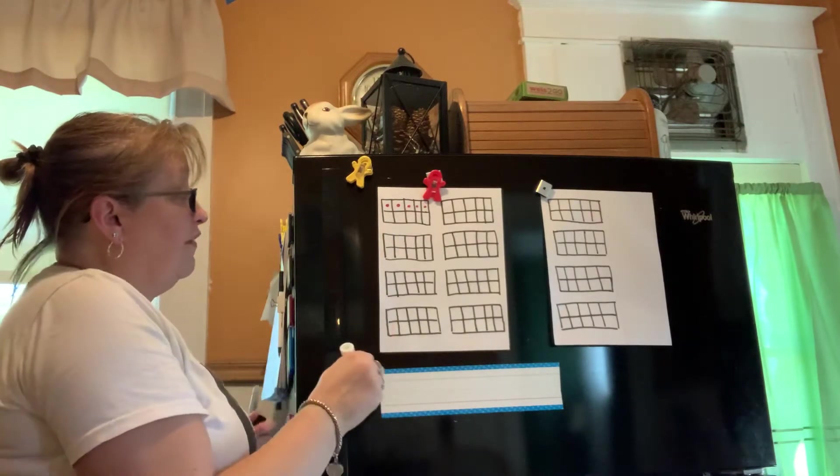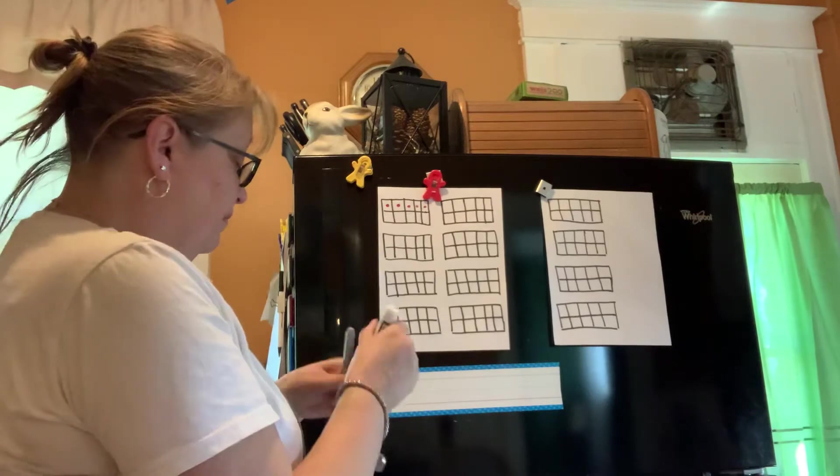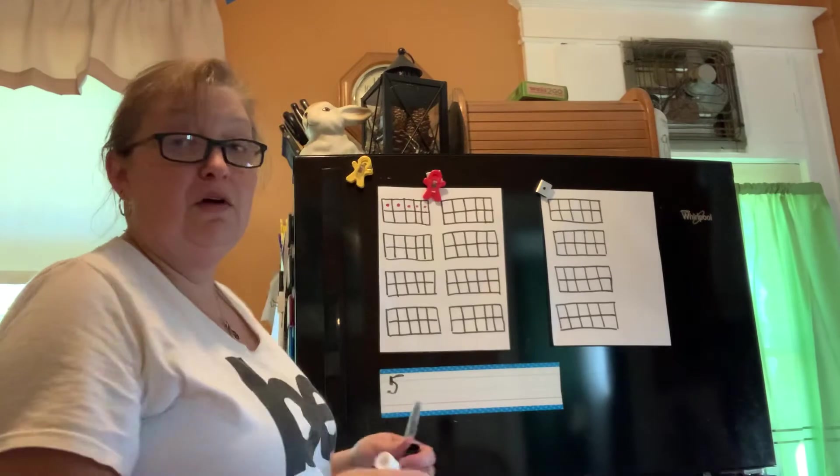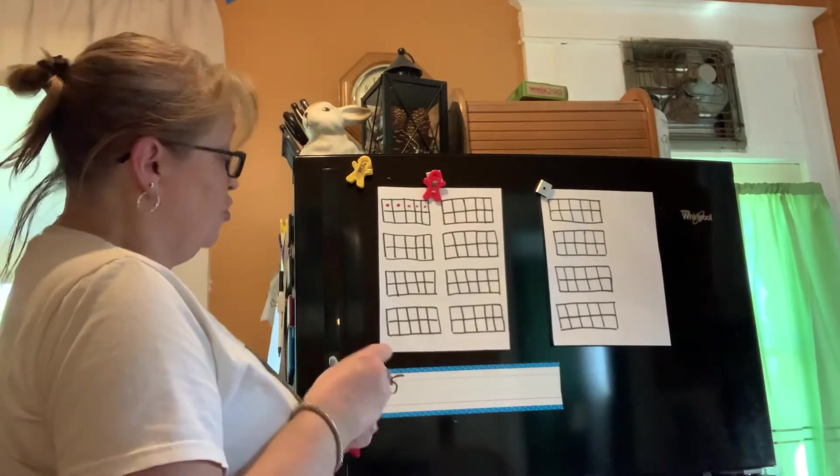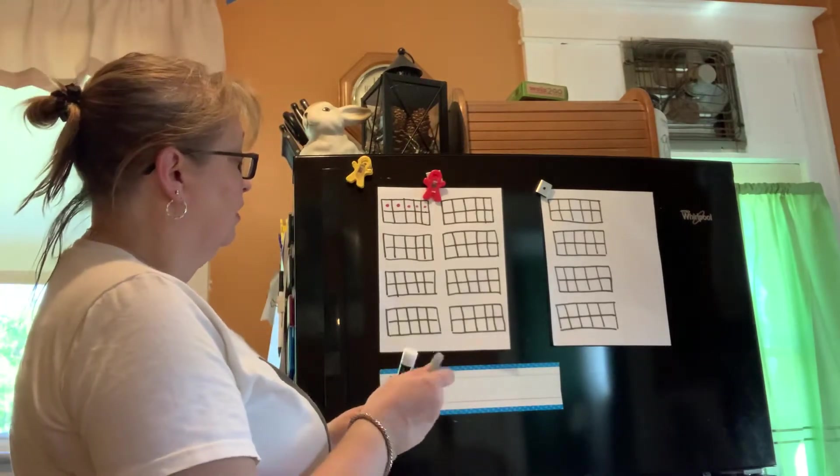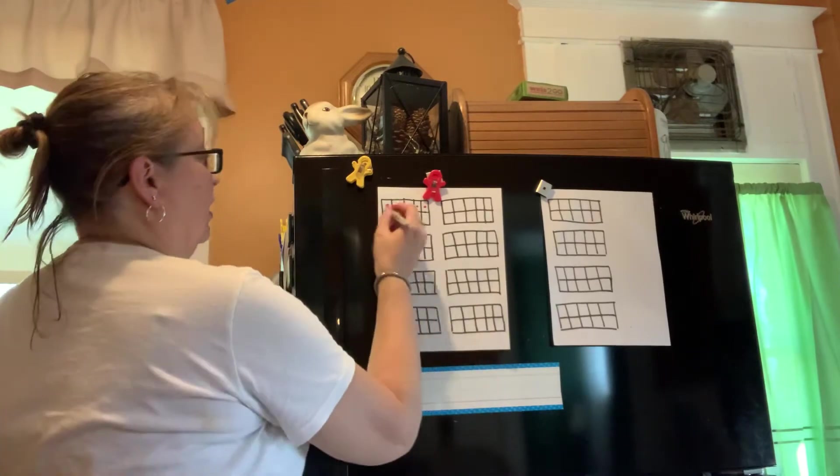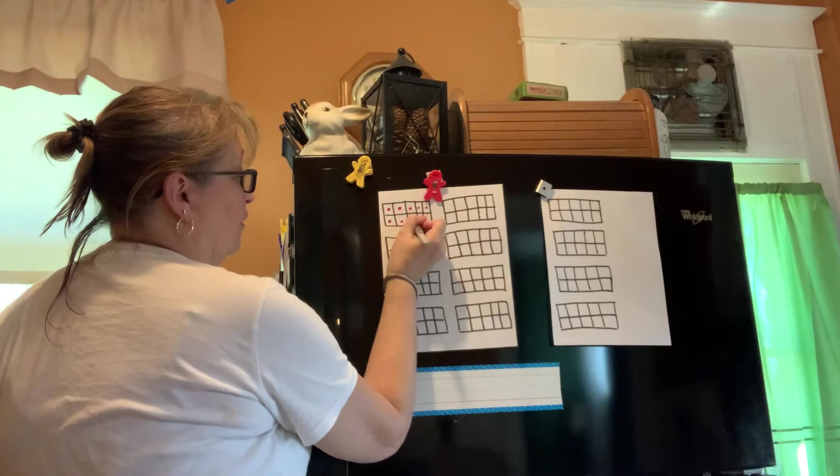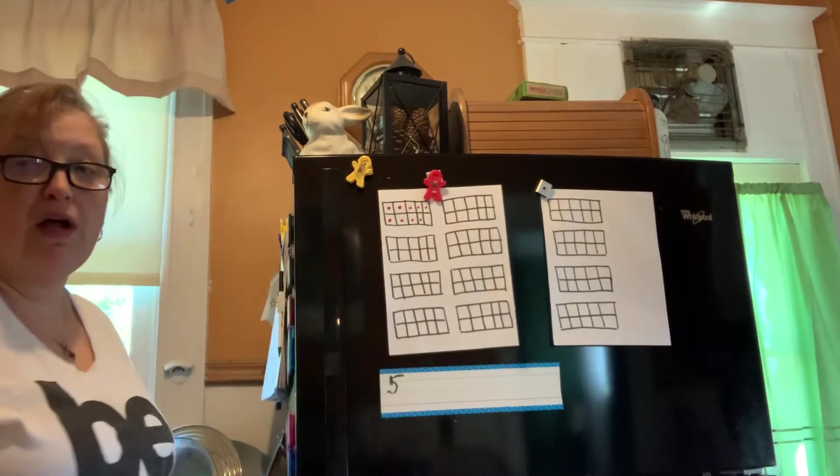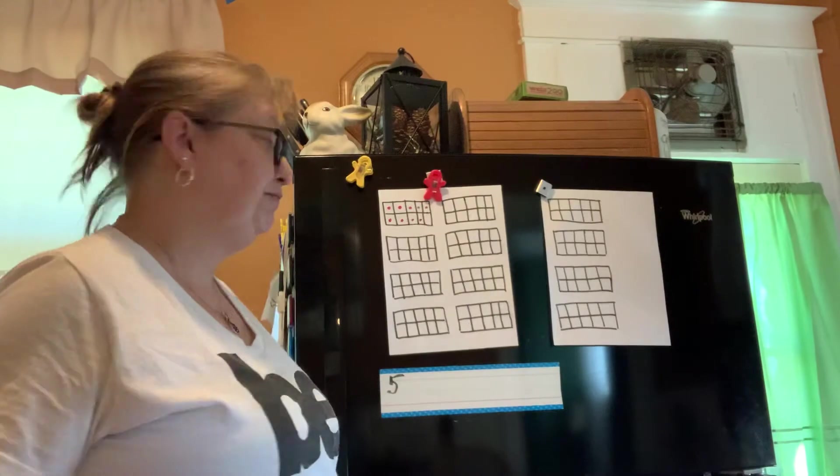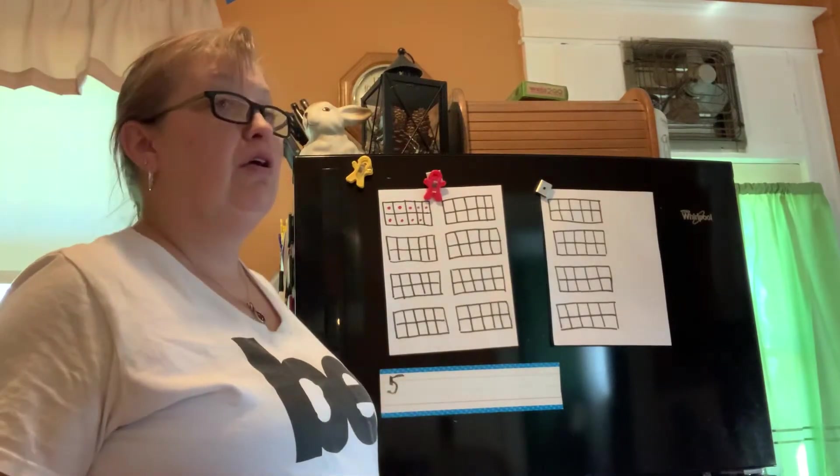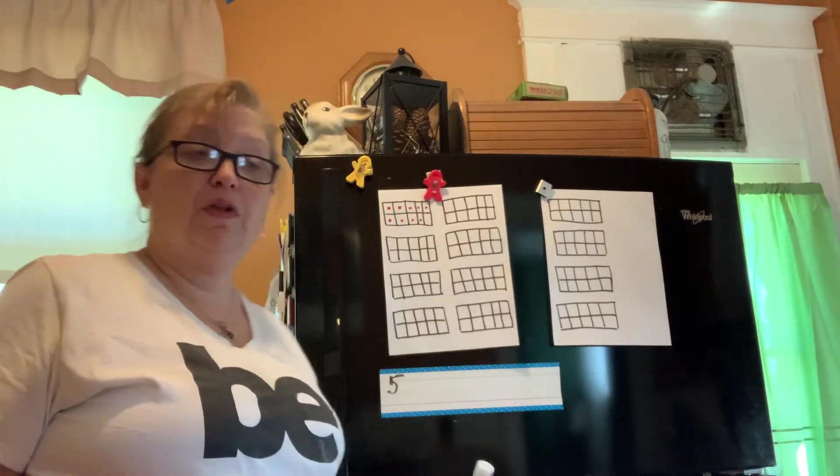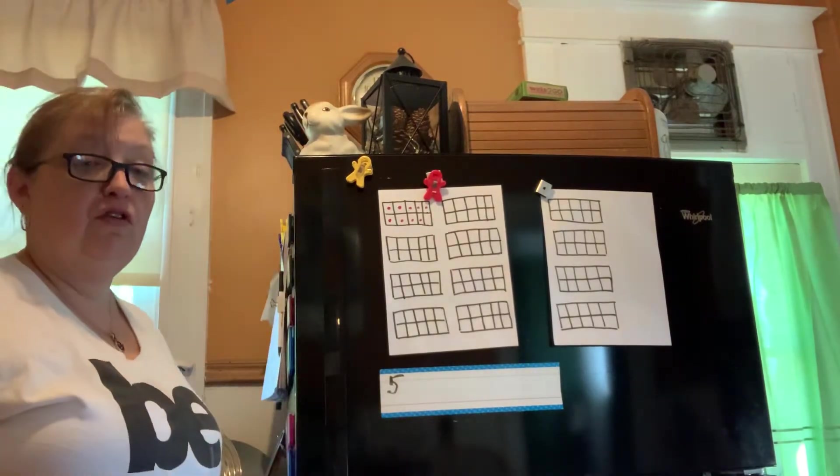And if I fill in the rest of my 10 frame, I could keep on going. I could also write the number five if I wanted to on my whiteboard and you could too. You can keep on going. Let's see if I can keep on going. So I have five. All right. So how many do I have on my 10 frame now? You can write the number here or use your fingers and we're going to figure it out.